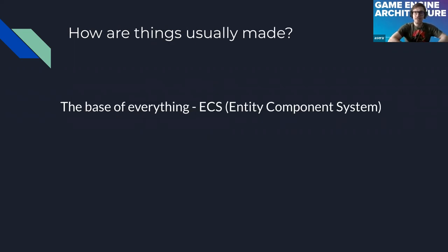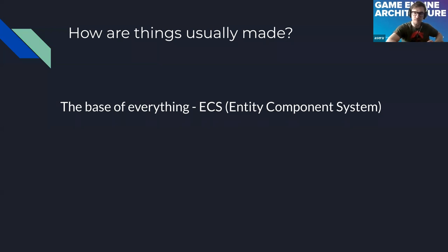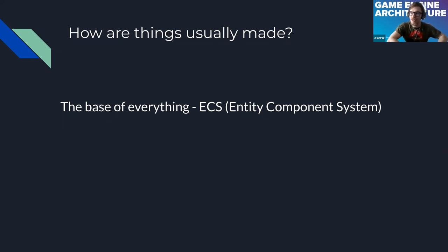The next thing is the very base of everything in how things are usually made in engines — the Entity Component System, or ECS. Every object is treated as having its own array of components. Every object has its own root, so for example we can have one object in the scene that has 10 different components. All of those components can be its children — the object is the parent — but those children can be parents of other components, like a tree that can go on and on.